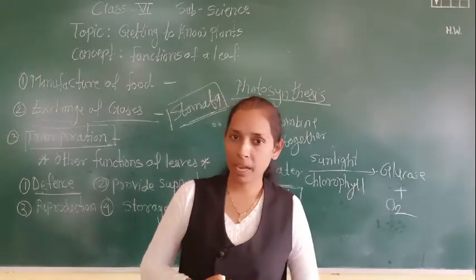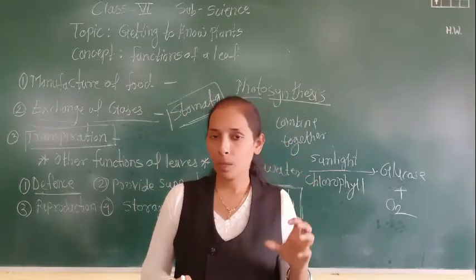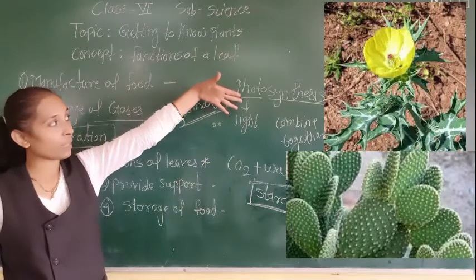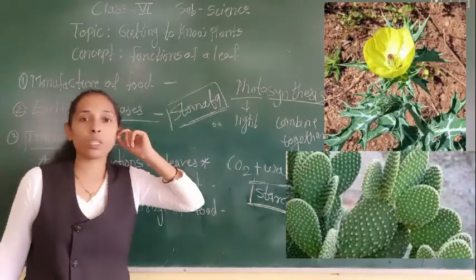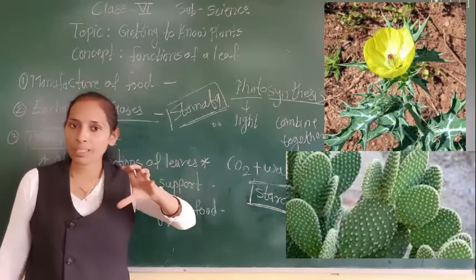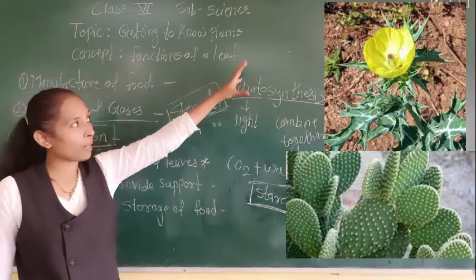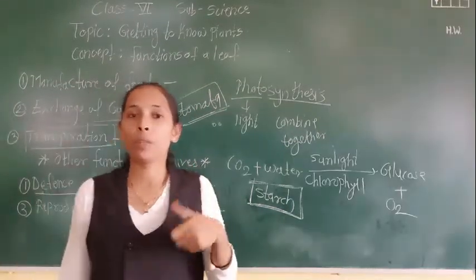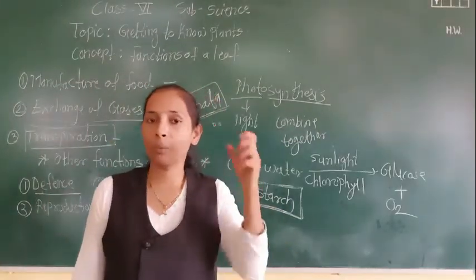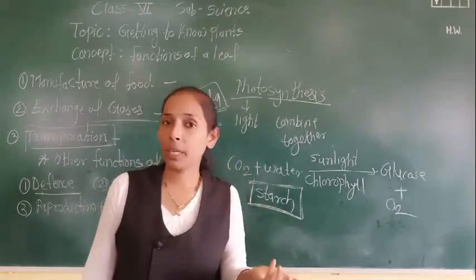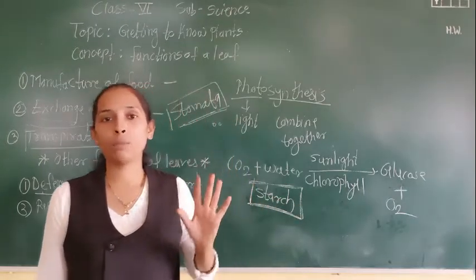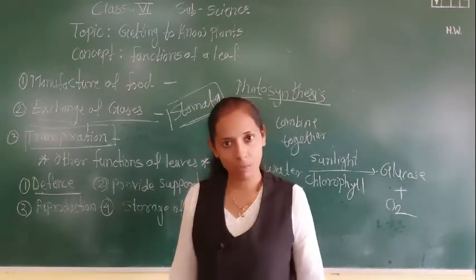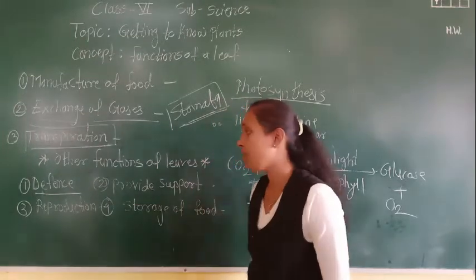For defense, certain plants like cactus and prickly poppy have leaves or parts of the plant that are modified into spines. You can see in the image how cactus and prickly poppies have spines on their surface. The sub-parts of the plants are modified into spines, which protect them from animals. Because of the spines, animals are unable to eat them, and in this way plants can protect themselves from herbivores and grazing animals. That is the first extra function — defense.